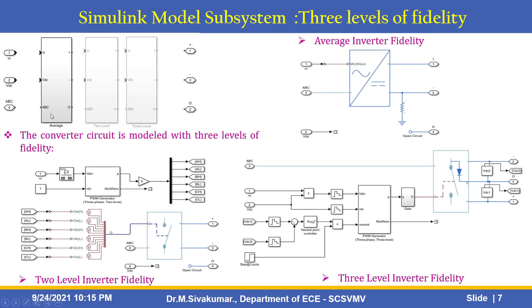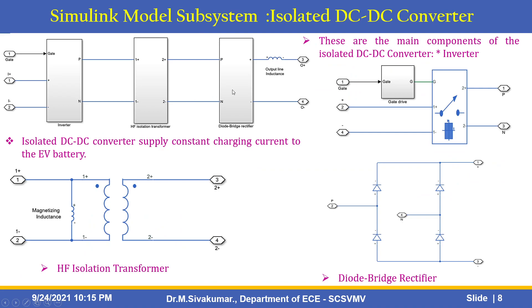You can select among the three: average inverter fidelity, two-level inverter fidelity, and three-level inverter fidelity. The two-level inverter fidelity is shown along with the PWM generator, and here also the three-level inverter fidelity circuits. Another subsystem is the isolated DC-to-DC converter. Its main components are: first, the inverter; second, the HF isolation transformer; third, the diode bridge rectifier. The isolated DC-to-DC converter supplies constant charging current to the EV battery.